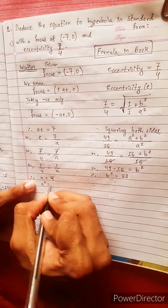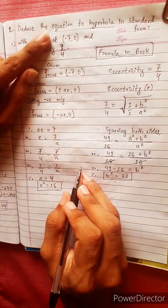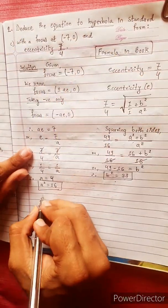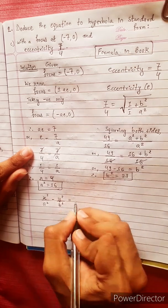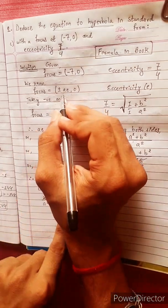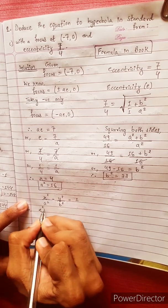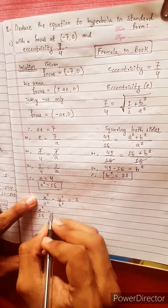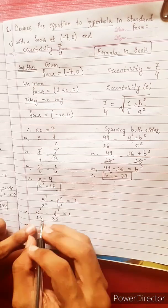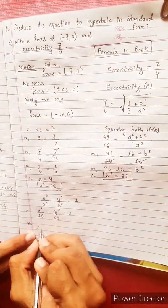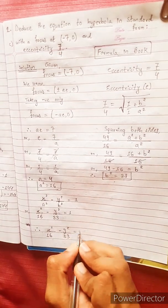So b squared equals 33 and a squared equals 16. The equation of the hyperbola is x squared by 16 minus y squared by 33 equals 1.